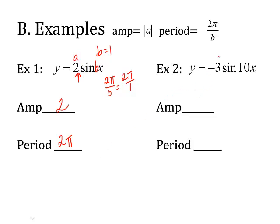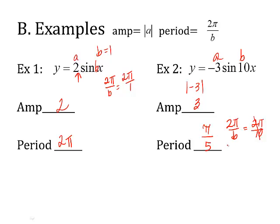Example 2. Here's A and here's B. To find my amplitude, I take the absolute value of negative 3. Absolute value makes it positive, so my amplitude is 3. For the period, I take 2π and divide it by B. In this case, my B is 10. So I reduce and get π over 5. That's the period of my graph — that's how long it takes to complete the full cycle.